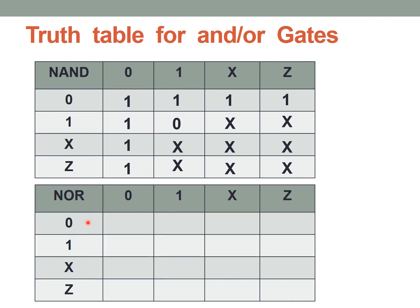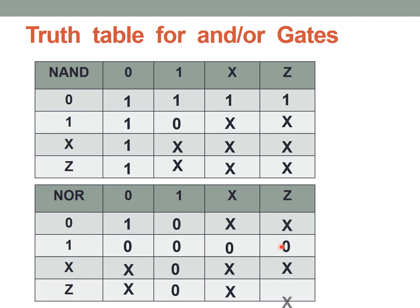Now let us see the truth table of the NOR gate. NOR is the complement of OR. In an OR gate, if any one input was high, the output was 1. But in a NOR gate, if any one input is 1, the output is 0. So the column and row where input is 1 are all 0s. For 0 NOR 0, the output is 1. When we have 0 with unknown, the result is unknown. Z with any condition is unknown, and unknown with any remaining condition is also unknown. This represents the truth table of the NOR gate.